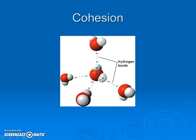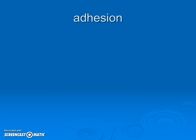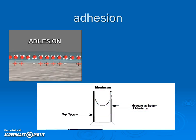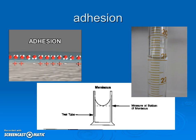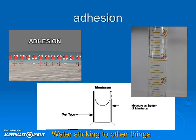Cohesion occurs because water molecules are attracted to each other and form hydrogen bonds — water sticking to water. Adhesion is water sticking to other things. Another example of adhesion is water sticking to glass. When we look at a graduated cylinder, we see a meniscus because the water slides up a little and sticks to the sides of the glass due to charged attractions. Remember, we always read from the bottom of the meniscus.